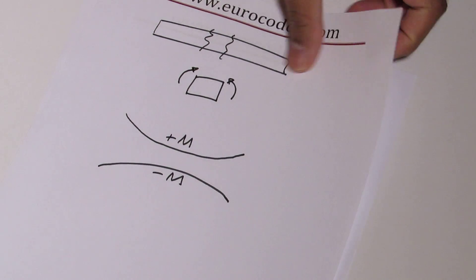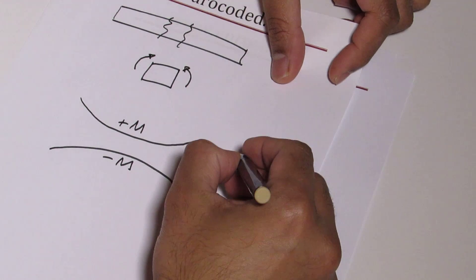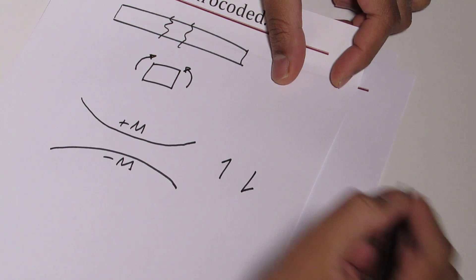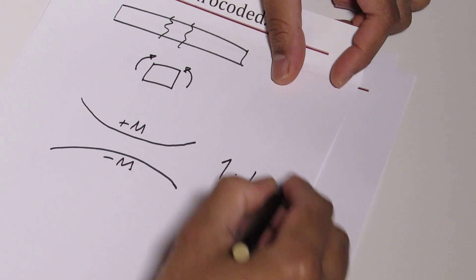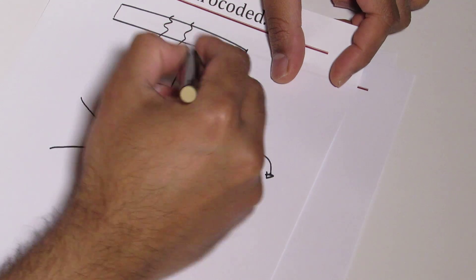And the sign convention for shear forces is if you take a couple like this, it should be clockwise. So if you take this point, it's turning this way. So shear force positive.